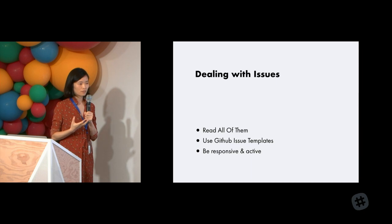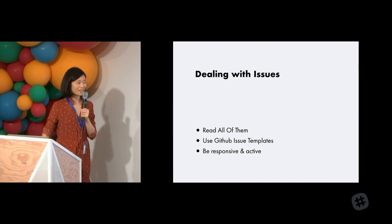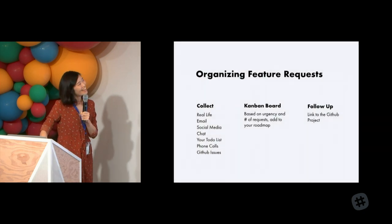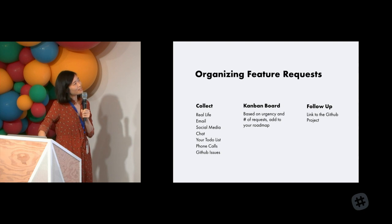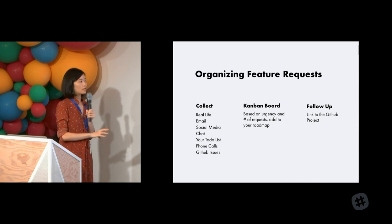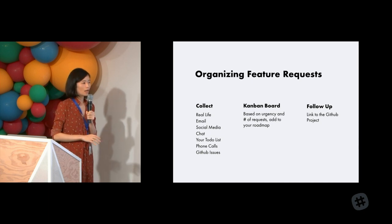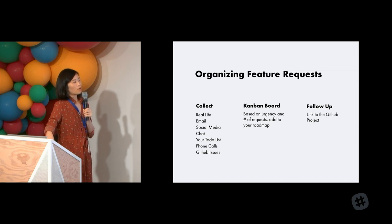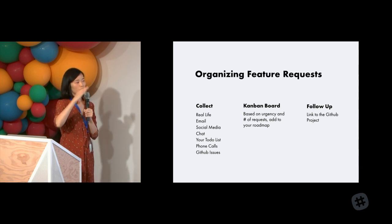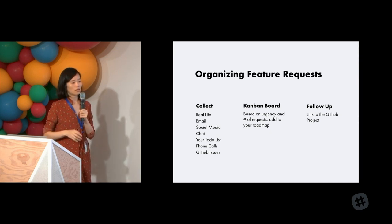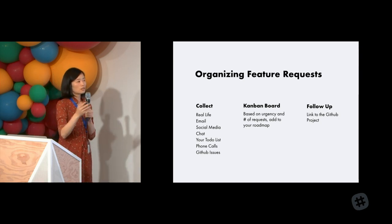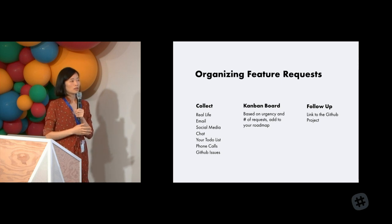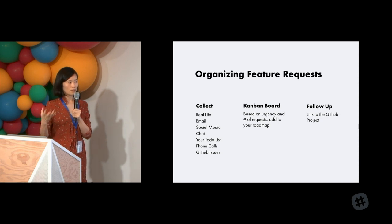In general, I try to be responsive and active when dealing with issues — no one likes to see an issue sitting there for months. The way I organize feature requests is using a Kanban board. After I collect feature requests from email, social media, and colleagues, I put them on the Kanban board, prioritize them based on urgency and how many times they've been requested, and then share this roadmap with everyone. I find it very helpful to share your roadmap so users are in the loop about what you're doing and when a requested feature will be out.